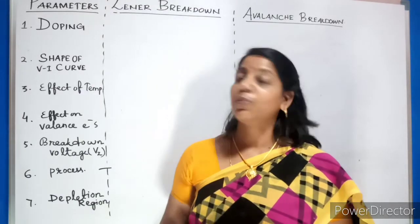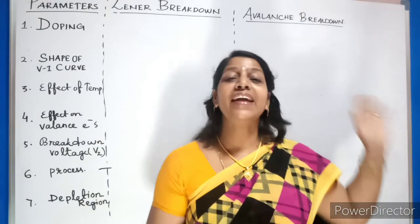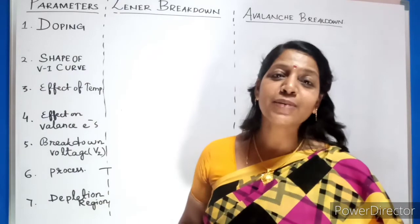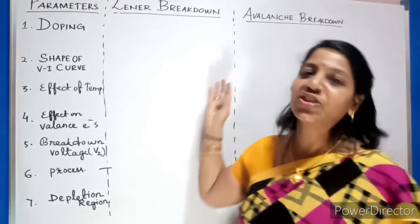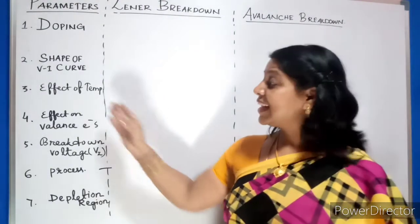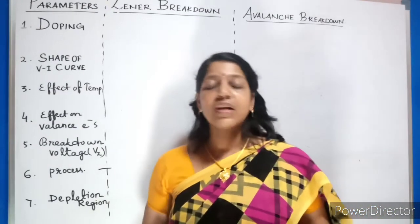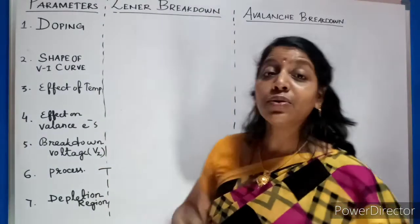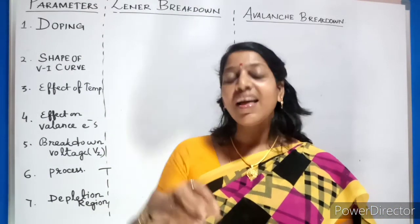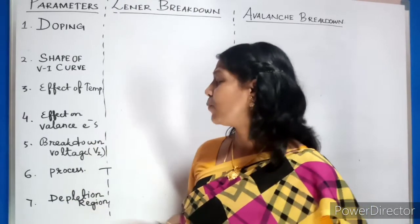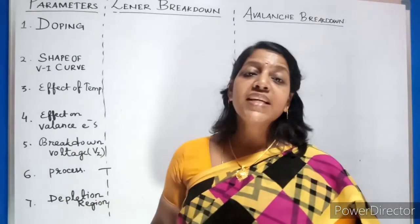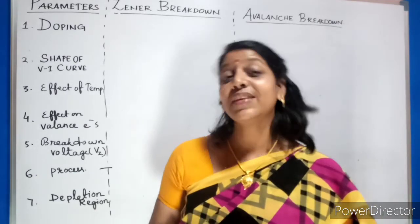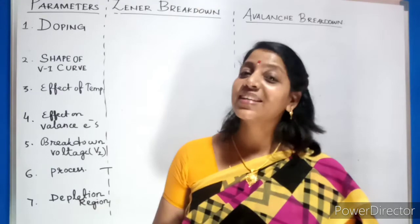Now let us compare them point by point. First, doping level: Zener diodes are heavily doped, whereas avalanche diodes are lightly or moderately doped. Second, shape of VI curve: Zener breakdown gives a very sharp curve, while avalanche breakdown gives a less sharp, more gradual bend. Third, effect on valence electrons: in Zener breakdown, the electric field pulls electrons from the valence band to the conduction band. In avalanche breakdown, the charges are pushed or knocked from the valence band to the conduction band.